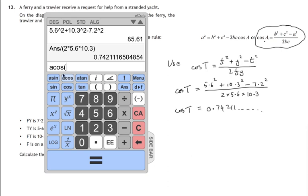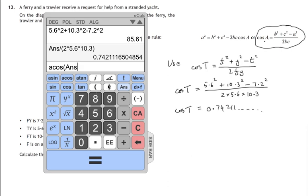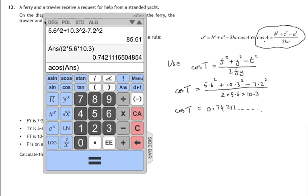You might have to press second function to get the cos to the minus 1, which will be above the cos button. So, what angle has a cos that is this answer? And we must make sure that our calculator is working in degree mode, otherwise we'll get the wrong answer. So, what is the angle whose cosine is this number?